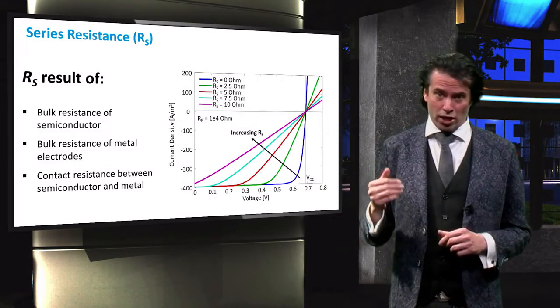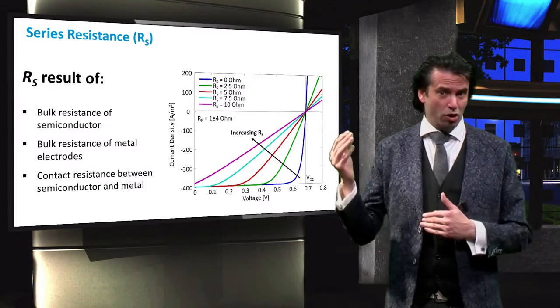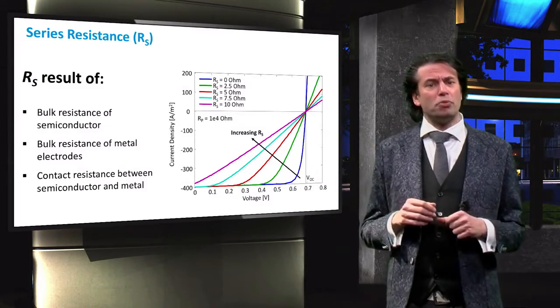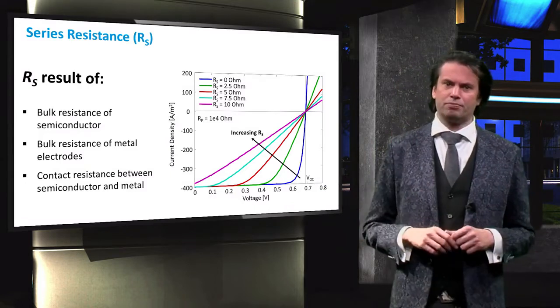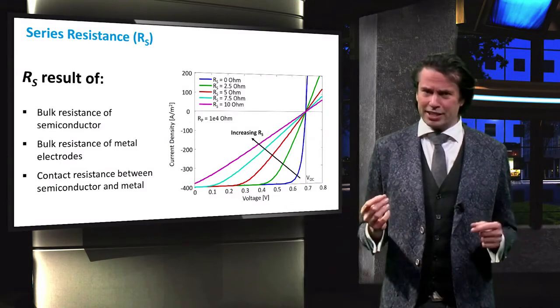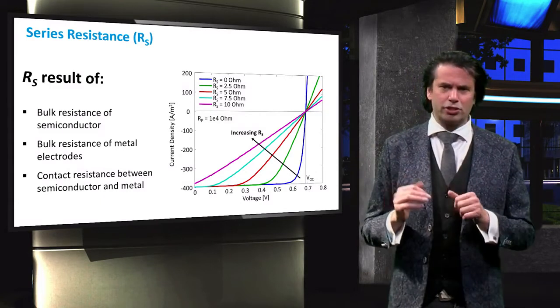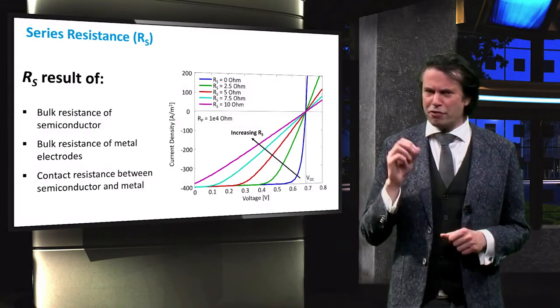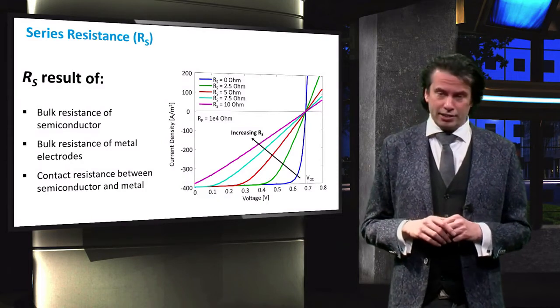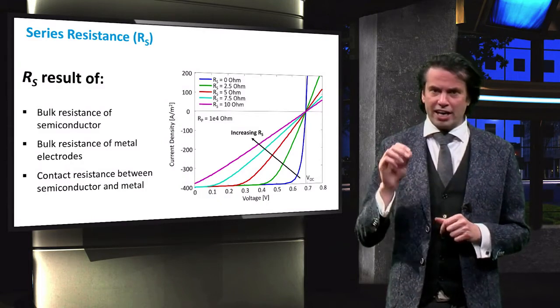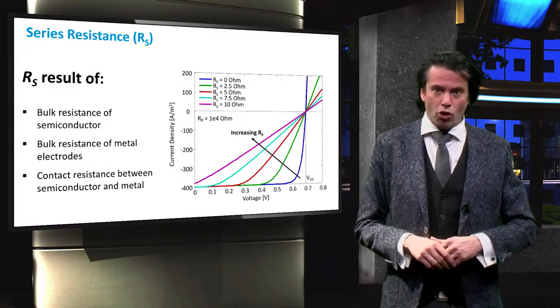You can see from this plot that as we increase our RS from 0 to 10 ohms, the solar cell goes from a diode characteristic to an almost linear characteristic. We can easily see that increasing the series resistance decreases the maximum output power, even though the VOC and the ISC stay the same. Therefore, RS only affects the fill factor of our solar cell.